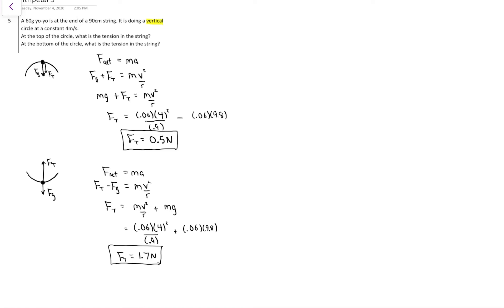At the top, the tension will always be smaller. If there is a risk of this string breaking, maybe you're spinning the yo-yo faster and faster until it breaks, it's always going to break at the bottom because that's where the string has to do the most pulling. Has to beat gravity by enough to create the mv squared over r. So tension's always biggest at the bottom. If it's going to break, it's going to break at the bottom.